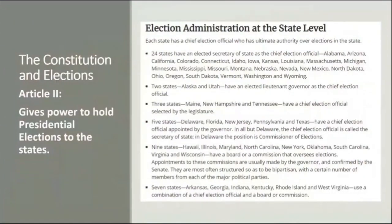The power of the states to hold presidential elections and send electors for the Electoral College can be found in Article II of the Constitution, the 12th Amendment, and in U.S. Code. Elections began as a clerical process and did not take very long to hold or to count, but state legislators began to formalize and regulate elections to ensure there were standards and consistency across the state.